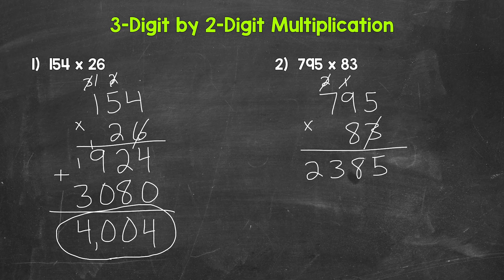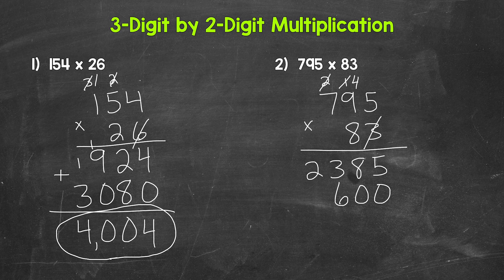Now we move over to the eight in the tens place, so we need our zero here. Then we can multiply. We start with eight times five — that's 40, so write our zero and carry the four. Now we have eight times nine, which is 72, plus four is 76 — write our six, carry the seven. And then next we have eight times seven, which is 56, plus seven is 63. So 795 times three is 2,385, and 795 times 80 is 63,600.